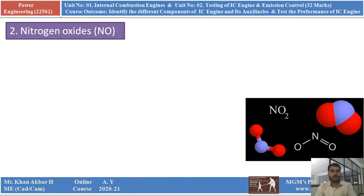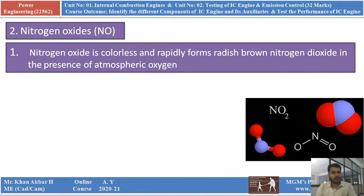The next is nitrogen oxides. Nitrogen oxide is a combination of nitrogen and two molecules of oxygen. Nitrogen oxide is colorless and rapidly forms a reddish-brown nitrogen dioxide in the presence of atmospheric oxygen. When nitrogen comes in contact with oxygen, it forms reddish-brown nitrogen dioxide. That is nitrogen oxides.